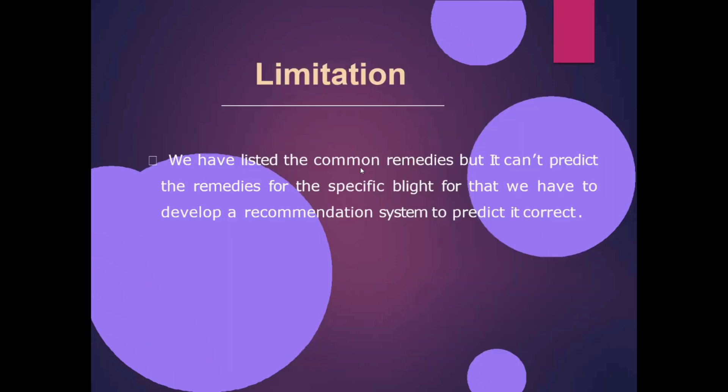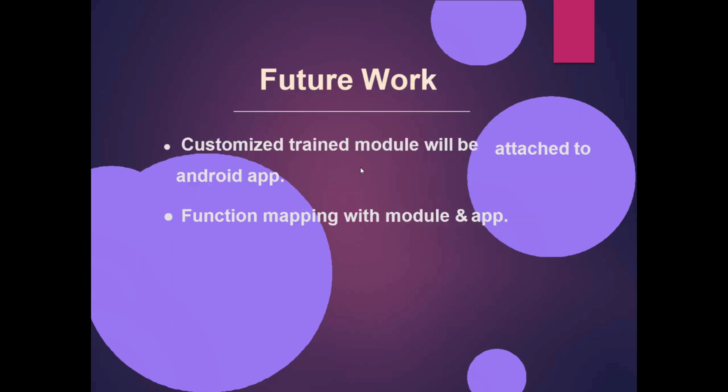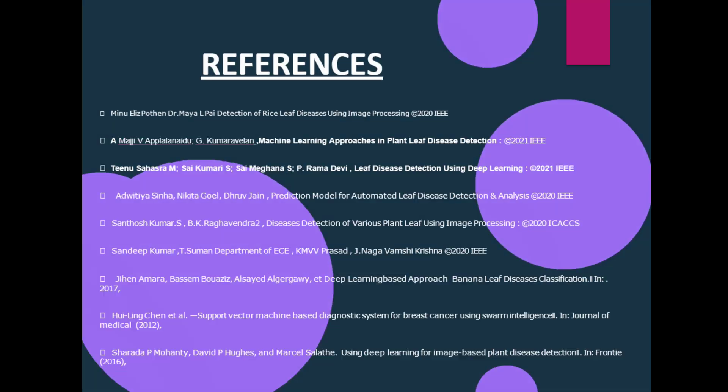The limitation of the project: we have listed the common remedies but it cannot predict the remedies for a specific blight. For that, we need to develop a recommendation system to predict it correctly. The future scope is that a customized trained module will be attached to the Android app with function mapping between the module and app.